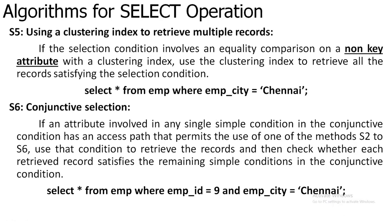The next algorithm is using a clustering index to retrieve multiple records. Same as the previous one, here we are going to retrieve multiple records, but by using a clustering index — that is a non-key attribute. Previously we saw the primary index, which is the primary key. Here we will be going with the clustering index, which is a non-key attribute. In the example: SELECT * FROM employee WHERE employee_count = 10. This is not a primary key, but by using conditions on the cluster index you can retrieve multiple records. You can also use less than, greater than, less than or equal to, or greater than or equal to.